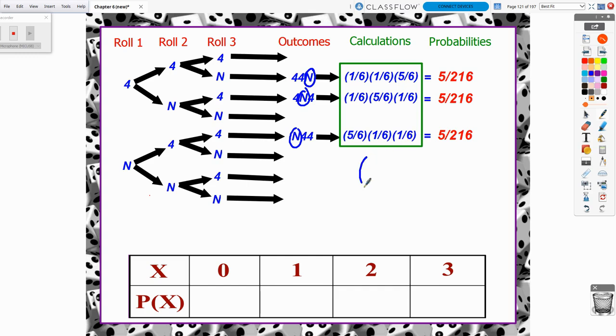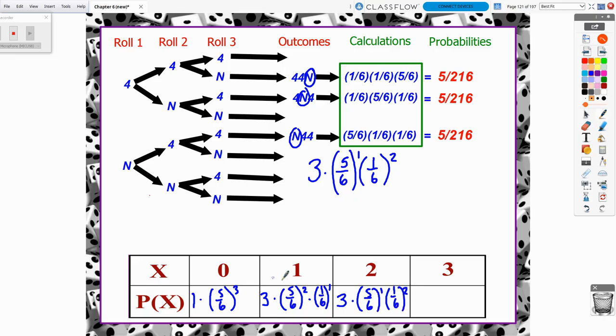So now for the x equals 2 scenario. If we saw two 4s, then that means we saw one roll that did not result in a 4. And there were three different situations for that. We have repeated 1/6ths. We have two of those. And then we only have one 5/6th. But there were three of these situations.